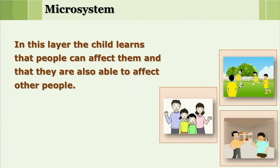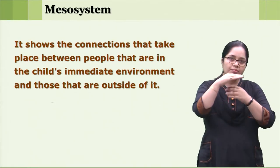In the mesosystem layer, the child is surrounded by family members, peers, and relatives. This layer plays a very important role in the development of the child, and the relationship here is bi-directional. Bi-directional means the child learns that people can affect them, and at the same time they are also able to affect other people.